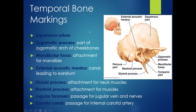Looking at the temporal bone, we can see the squamous suture, the zygomatic process which makes up part of the arch for your cheekbones, and just underneath and behind the zygomatic process is the mandibular fossa — a very shallow dip in the temporal bone where your mandible attaches for your TMJ, your jaw joint. Just posterior to that is the external acoustic meatus, which is the canal that leads to your eardrum and is part of your ability to hear.